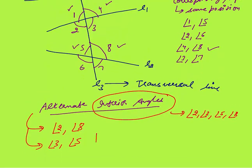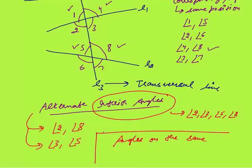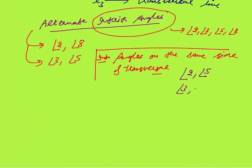Next is interior angles on the same side of the transversal. The interior angles are 2, 3, 5, and 8. On the same side would be angle 2 and 5, and angle 3 and 8. These are called interior angles on the same side of the transversal.